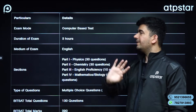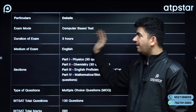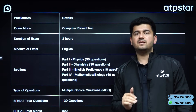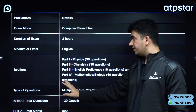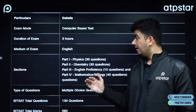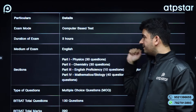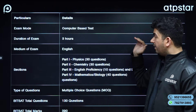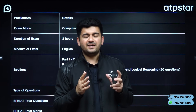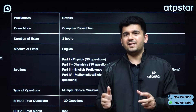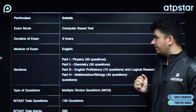As you can see, it is a computer-based examination in which the duration of the exam is 3 hours and the medium of exam is English. There are a total of 4 sections. The first section is Physics, then Chemistry — both have equal number of questions, 30 questions each. The speciality of BITSAT which differentiates it from IIT JEE Main exam is the English Proficiency and Logical Reasoning section.